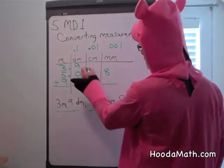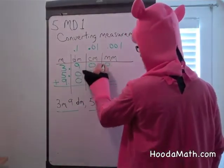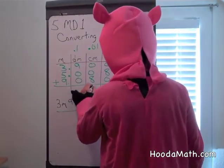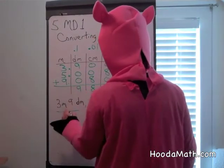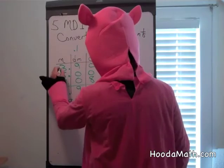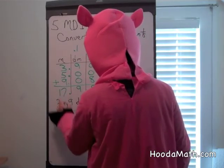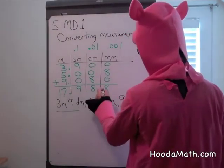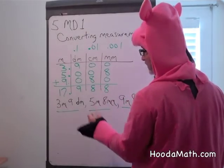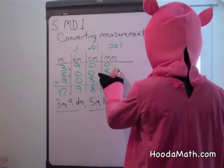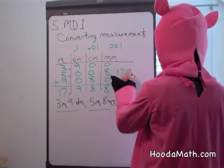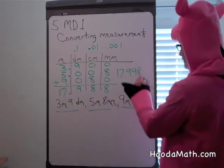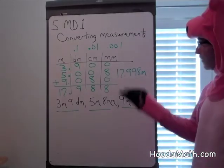Now let's add this together to see how much wood we need in total. Now in the places where there's nothing, you can put the number zero. Eight millimeters, eight centimeters, nine decimeters, and we add this. We get 17 and 988 thousandths of a meter — 17 meters and 998 thousandths of a meter. Almost 18 meters.